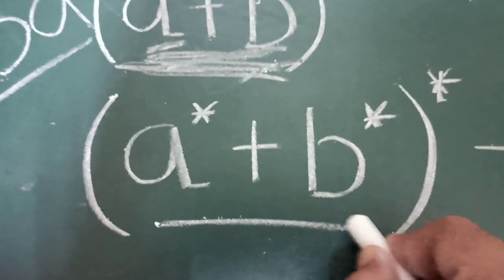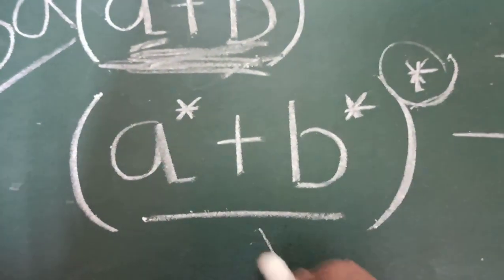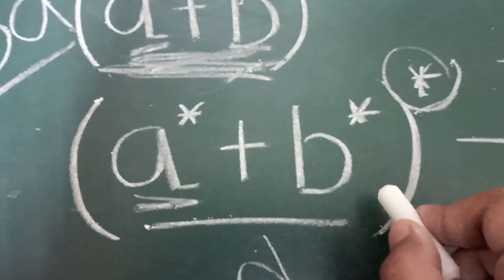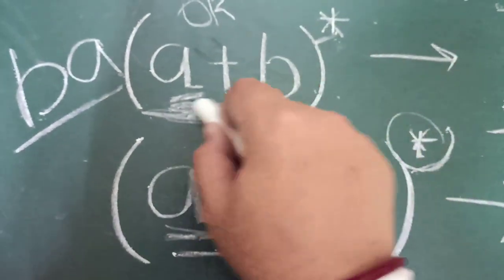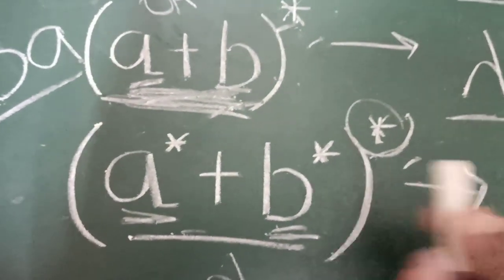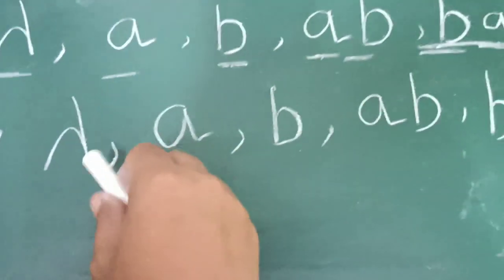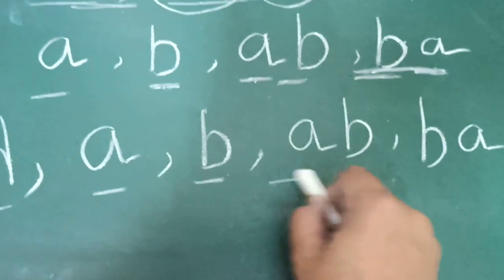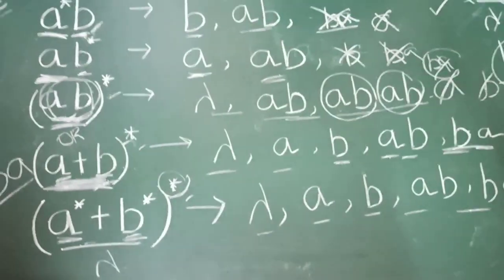Next is A* B* whole star. Because there is a whole star, lambda is definitely accepted. Any combination of A and any combination of B can be done. That's why this and (AB)* and (A+B)* are actually the same — lambda is accepted, and any combination of A and B such as AB, ABBA, BA are all accepted here.